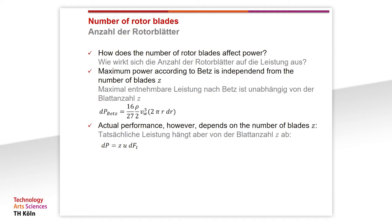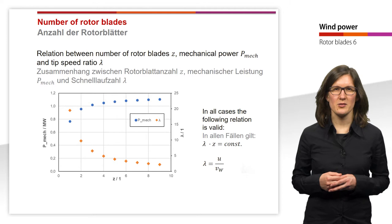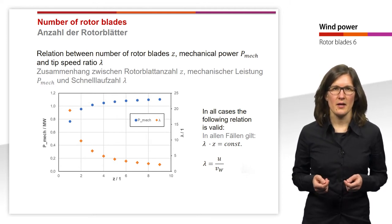The actual power is calculated by the number of rotor blades times the circumferential velocity u times the tangential force Ft, which acts in the direction of the velocity u. In this graph you can see the relation between the number of rotor blades z, the mechanical power p, and the tip speed ratio lambda.